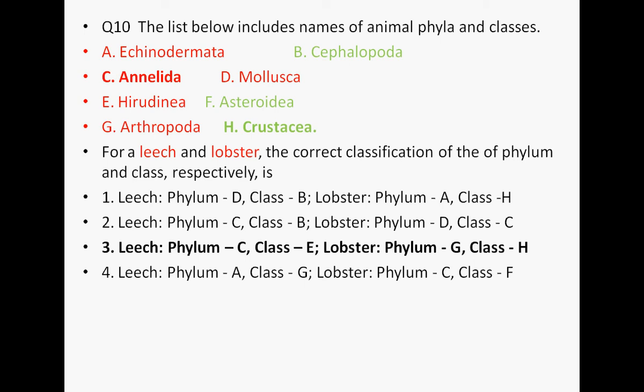Question ten lists animal phyla and classes: Echinodermata, Cephalopoda, Annelida, Mollusca, Hirudinea, Asteroidea, Arthropoda, and Crustacea. Echinodermata, Annelida, Mollusca, and Arthropoda are phyla. Cephalopoda, Hirudinea, Asteroidea, and Crustacea are classes. For a leech: leeches belong to Annelida, so the answer corresponds to C and E. For a lobster: lobsters belong to Arthropoda, corresponding to G and H. The third answer option is correct.